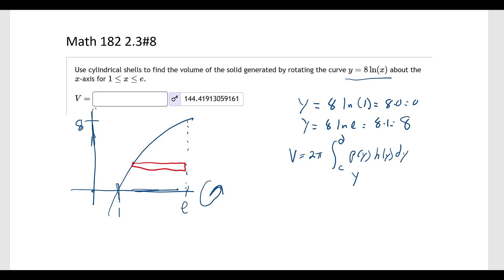So let's look at what this function would be, what the height of this would be. This side gives us an e, that's just e, and this side over here is our 8 natural log of x. Now we need to put this in terms of y though, that's the hard part.